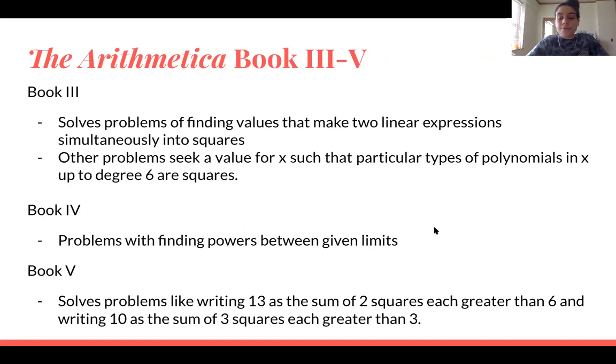Books three to five of the Arithmetica. Book three, Diophantus solved problems of finding values that make two linear expressions simultaneously into squares, and then some other problems seeking a value for x such that particular types of polynomials in x up to degree six are squares. Book four consisted of problems with finding powers between given limits, and book five solved problems like writing 13 as the sum of two squares each greater than six, and writing 10 as the sum of three squares each greater than three.